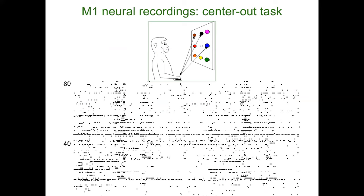Assume that I'm recording from primary motor cortex, area M1, with a multi-electrode array that allows me to record on the order of 800 neurons from a non-human primate — a monkey doing some reaching tasks. In this case, a very simple center-out task in which the monkey focuses at the center target, one of eight peripheral targets illuminates, there is a hold period, then he gets a go signal, and he's supposed to execute the reach from the center to the target that was illuminated for that particular trial. While the monkey does that, we record in primary motor cortex.